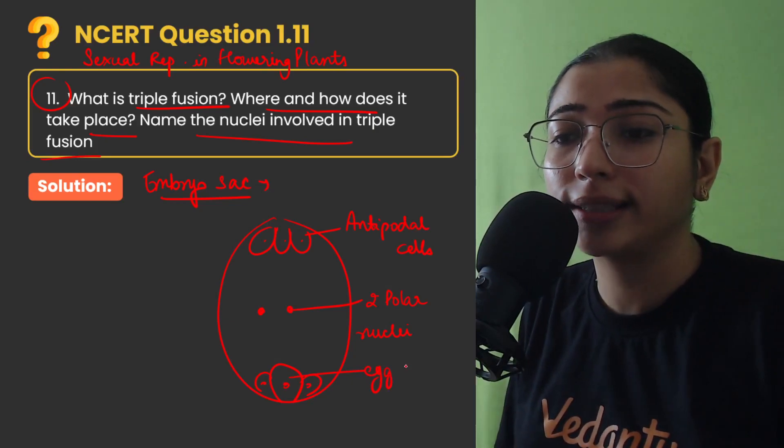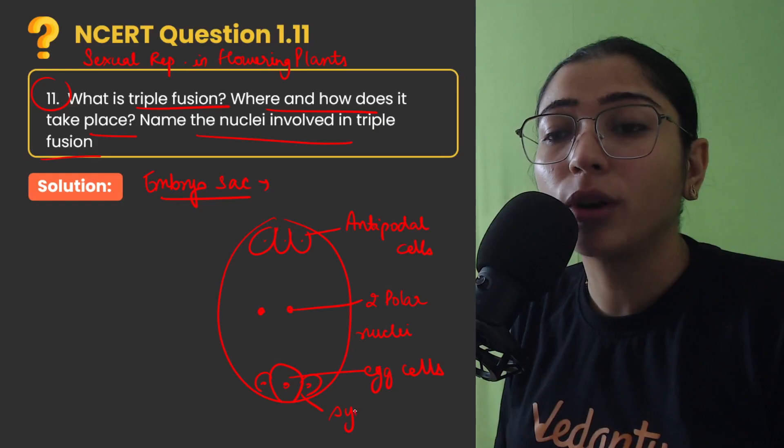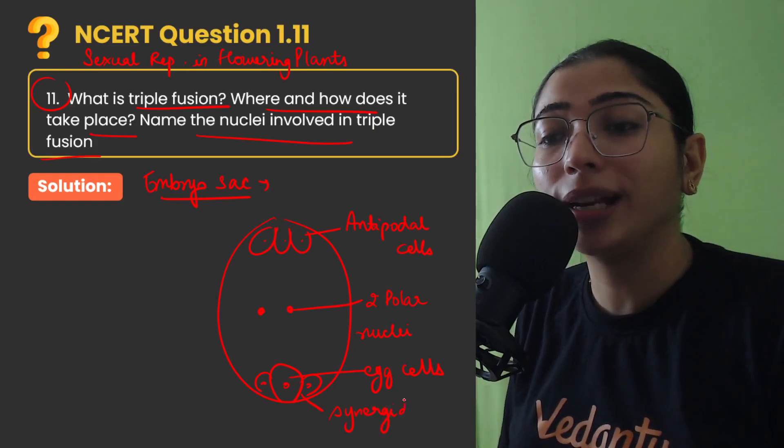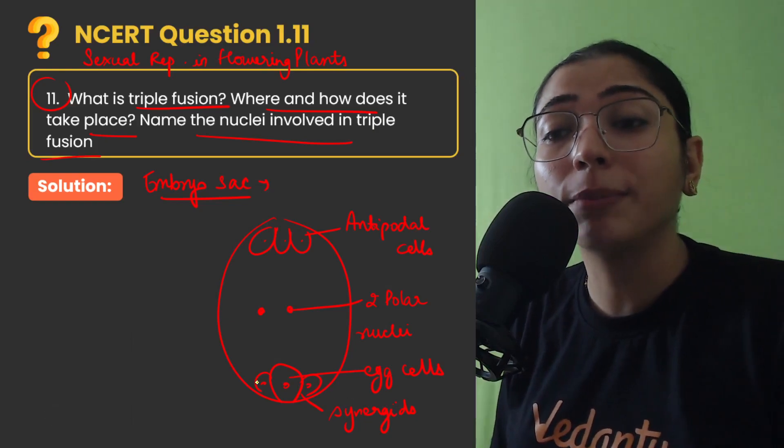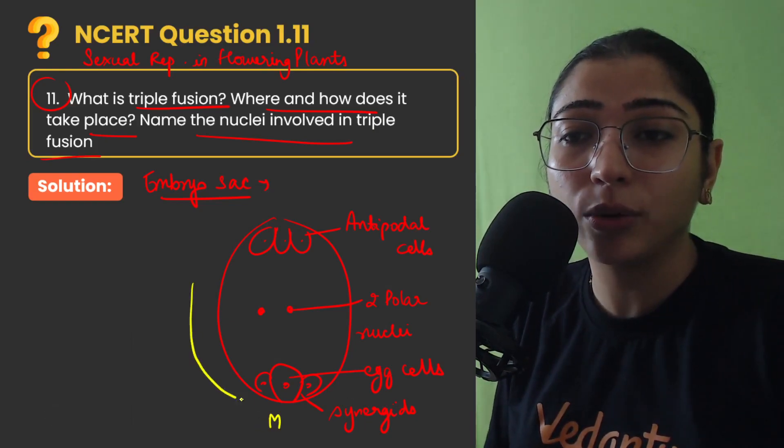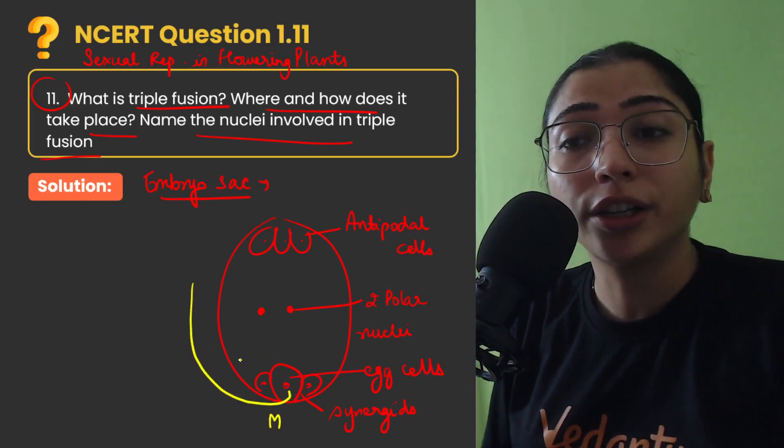So this is one large egg cell. What is going to happen is that when the pollen tube is germinated, it will enter into the ovule and it will enter into the embryo sac from the micropylar end. So the micropylar end will be entry from the pollen tube inside the embryo sac.